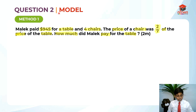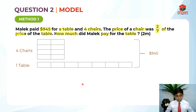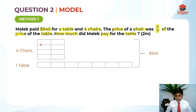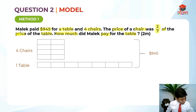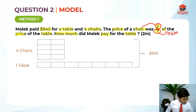In the model method, we should always draw the model first. So this is the model over here. 4 chairs is all of them — that's 2 units over here. You need to understand why there are 2 units: 2 units represent the chair, and these 7 units represent the table. This is very important that you should know in order to draw the model.